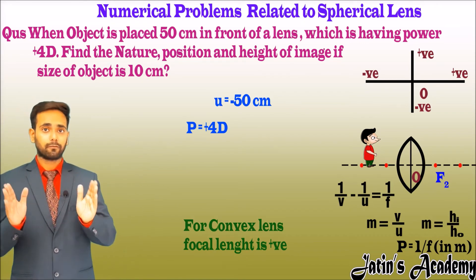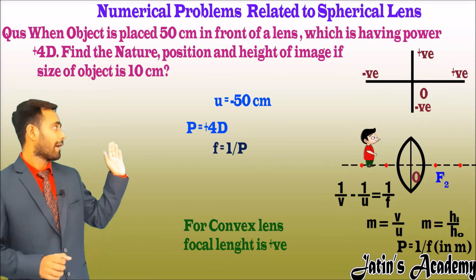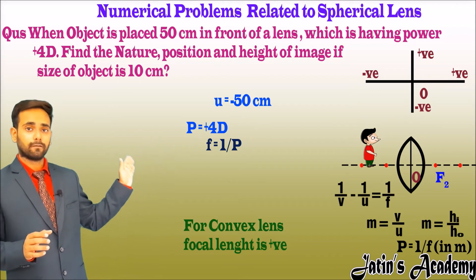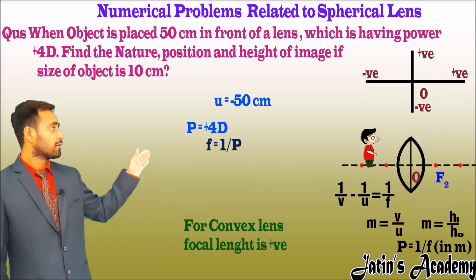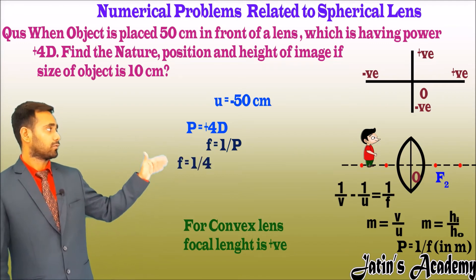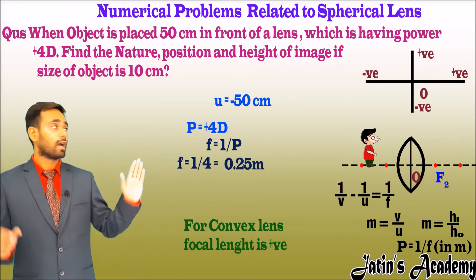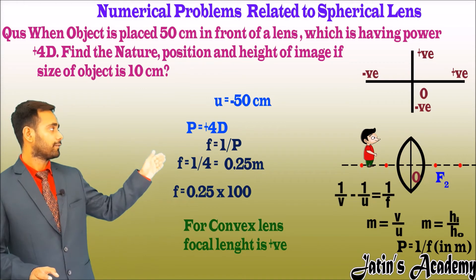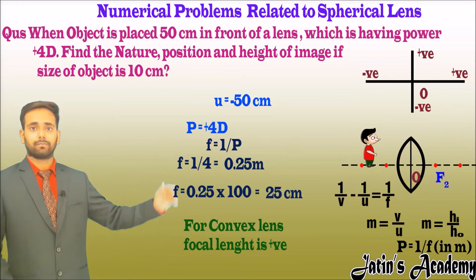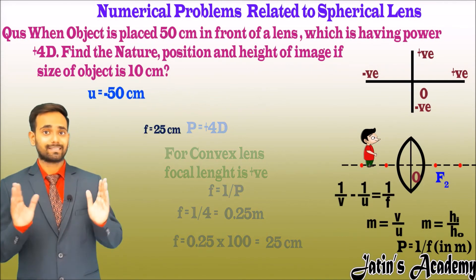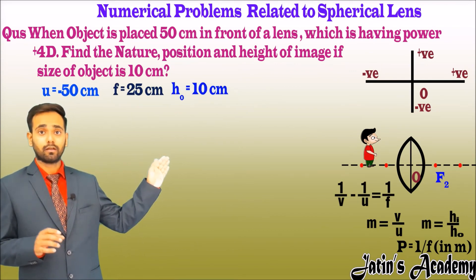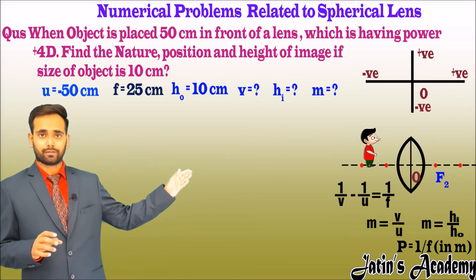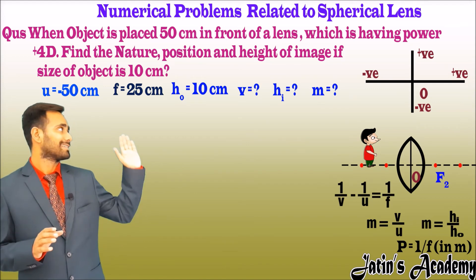First, find the focal length: f = 1/P = 1/4 = 0.25 meters. Multiplying by 100 to convert to centimeters gives f = +25 cm. Given data: u = −50 cm, f = +25 cm, h_naught = 10 cm. We need to find v (image position), h_i (image height), and magnification.